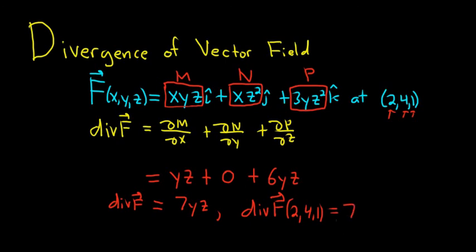So that's going to be 7. And then Y is 4, so times 4. And then Z is 1. So we end up with 28.